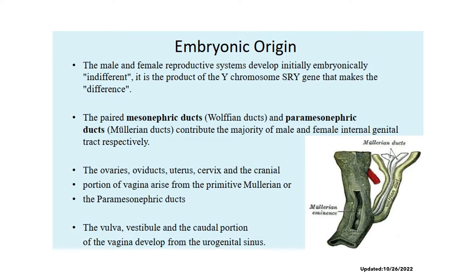In terms of embryonic origin, the male and female reproductive systems develop initially the same. It is the SRY gene that is responsible for the differentiation of the embryo into male and female. We have the paired mesonephric or Wolffian ducts and the paramesonephric ducts or Müllerian ducts. The mesonephric duct later becomes the male reproductive tract, while the paramesonephric or Müllerian duct later becomes the female reproductive tract. The ovaries, oviducts, uterus, cervix, and cranial portion of the vagina arise from the primitive Müllerian duct, while the vulva, vestibule, and caudal portion of the vagina develop from the urogenital sinus.